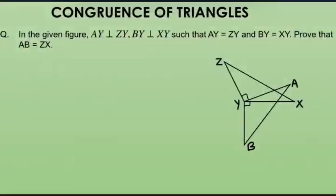Now, how to decide which two triangles to take for proving congruency, and how to identify three equal pairs. In the given figure, AY is perpendicular to ZY, BY is perpendicular to XY, AY equals ZY, and BY equals XY. We need to prove AB equals ZX. Since AB is in one triangle and ZX in another, we identify triangle ABY and triangle ZXY.